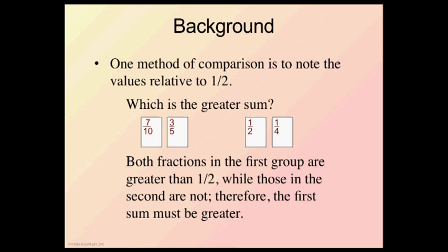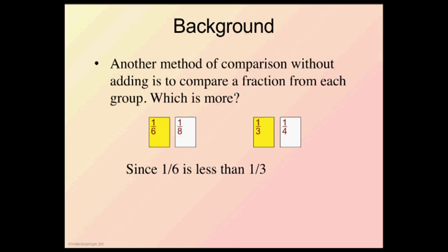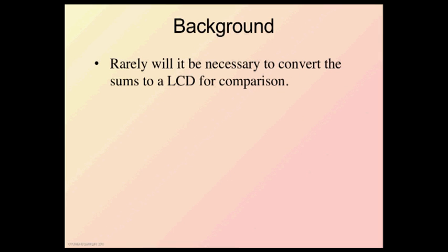Let's do another one here. Another method for comparison without adding is to compare a fraction from each group. So, which is more? Now, here I can compare the one-sixth and the one-third. One-sixth is less than one-third. Let's look at the one-eighth and the one-fourth. One-eighth is less than one-fourth. So it's pretty easy to see that the group on the left is going to be less. The group on the right is greater. Rarely will it be necessary to convert the sums to the lowest common denominator for comparison.